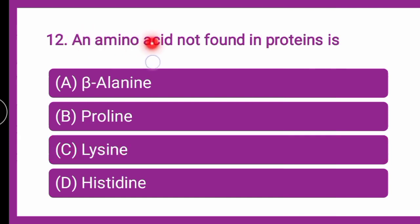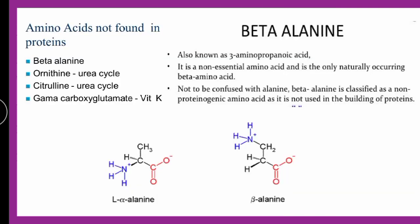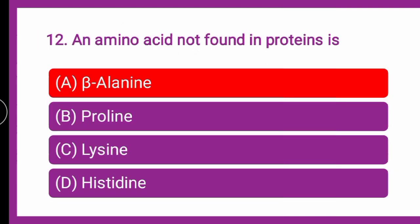Next question: an amino acid not found in proteins is — whether it is beta-alanine, proline, lysine, or histidine. The amino acid not found in protein is beta-alanine, also known as 3-aminopropanoic acid. It is the only naturally occurring beta-amino acid and differs from alanine — it is a non-proteinogenic amino acid that does not act as a building block of protein. So the correct answer is beta-alanine.